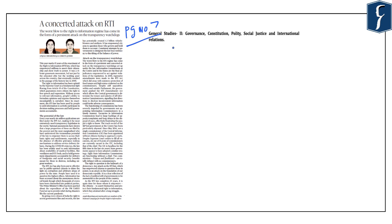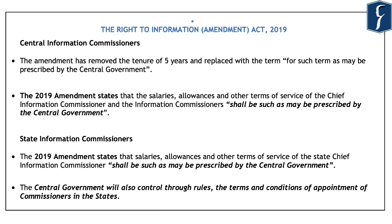We will also look at some of the general issues faced in the functioning of the Right to Information Act and the functioning of the Information Commissions, which can be used in answering questions in General Studies Paper 2 in the Governance part, and also in writing answers in the Ethics Paper in General Studies Paper 4. The 2019 amendment has changed the tenure of the Chief Information Commissioner and the State Information Commissioners and has also changed the terms of service of these offices.